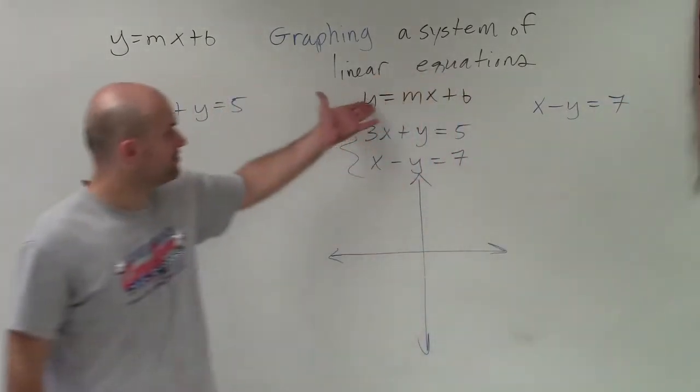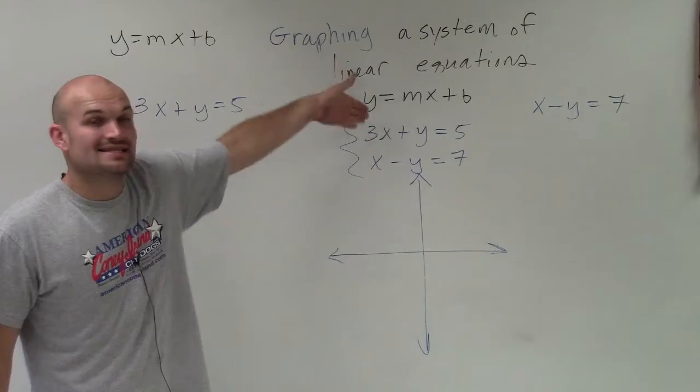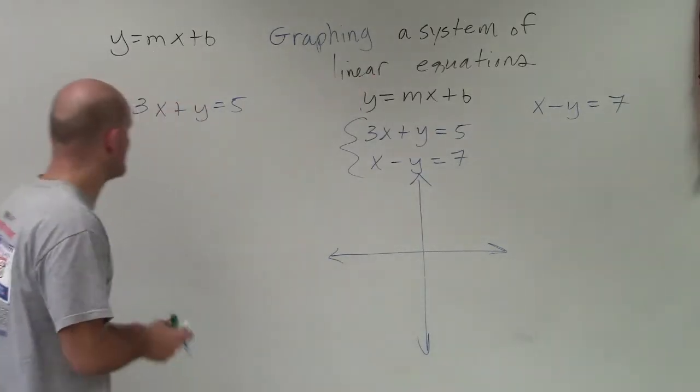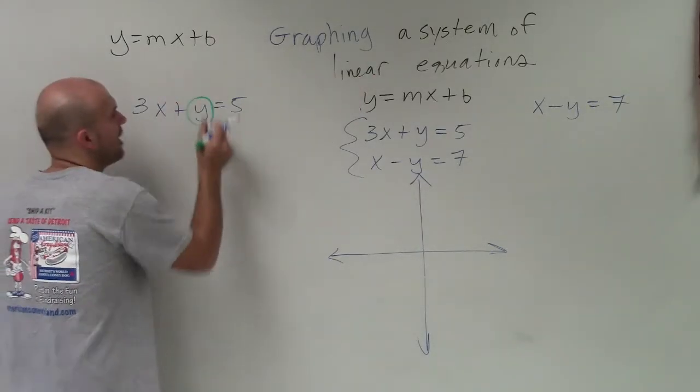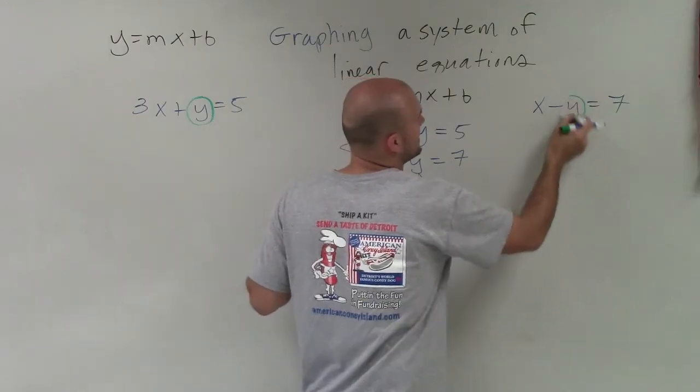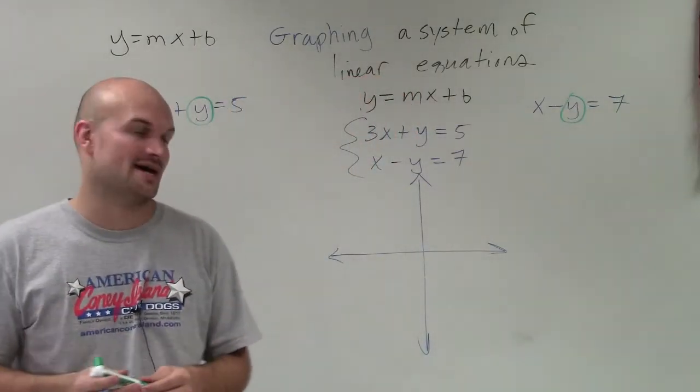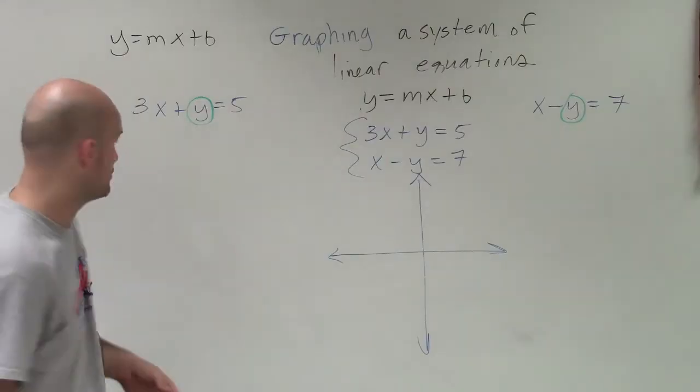So to convert to slope-intercept form, which is right here, we need to isolate our variable y. So what I like to do sometimes is circle the y. Therefore, that's going to tell me I need to undo everything that's happening to that, just like we solve our literal equations.